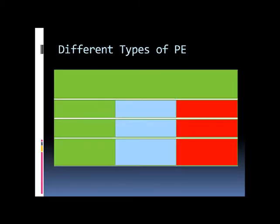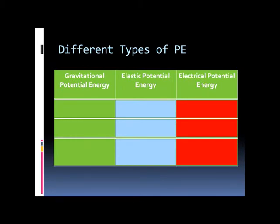The third part of our lecture talks about the different types of potential energy. We learnt that there are three different types of PE: Gravitational Potential Energy, Elastic Potential Energy, and Electrical Potential Energy.